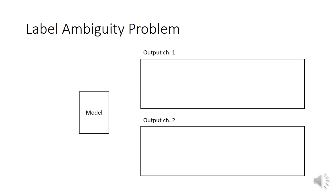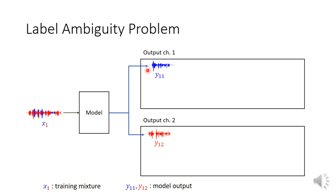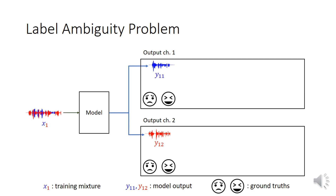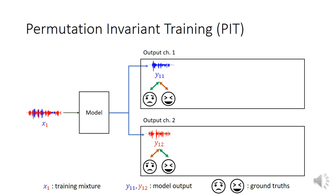The first question we would like to ask is: do we need PIT? Let us take a look at the label ambiguity problem. We input a training mixture X1 into the model, and the model will output two predictions — the blue and the red waveform in the two output channels. We then have two possible label assignments between the two model outputs and the two ground truths: the green one and the brown one. However, we must choose either one correspondence to update the model parameters. PIT works by calculating both the cost of the green and the brown assignment and choosing the minimum — in this case, PIT will choose the green one.